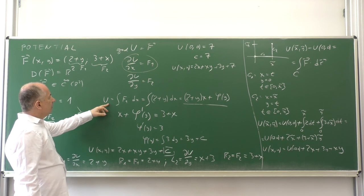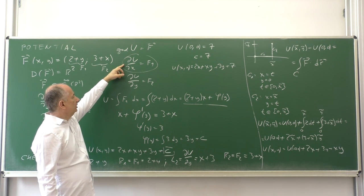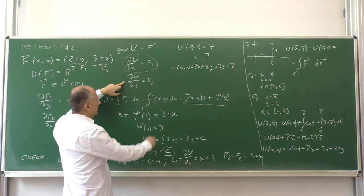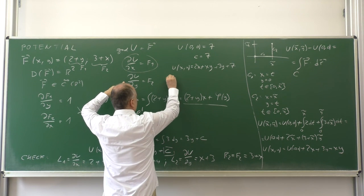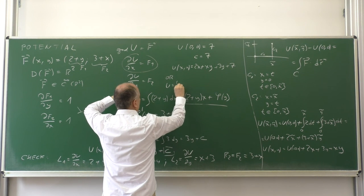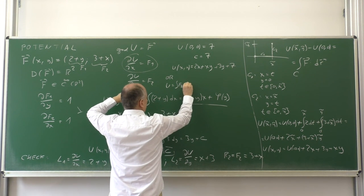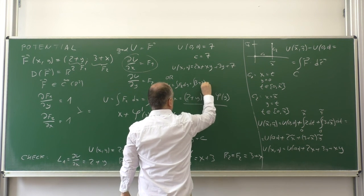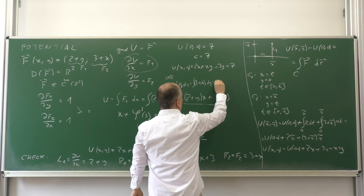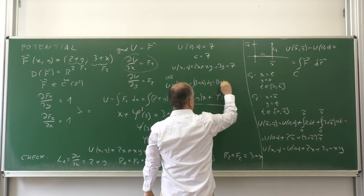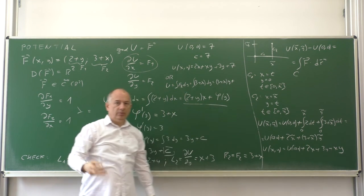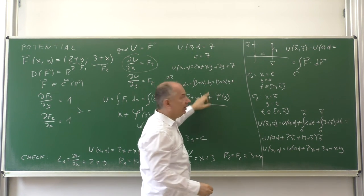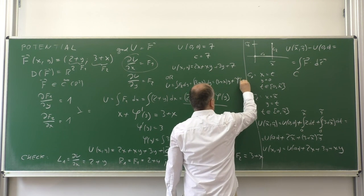Going back to the first approach, we started with the first equation and then used the second one. Alternately, we can start with the second equation to write u is integral of F2 dy, which is 3y plus xy plus some constant not depending on y but which may depend on x, let's call it ψ of x.